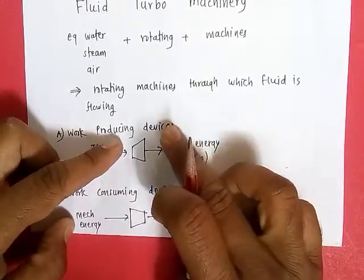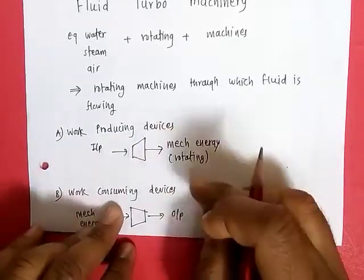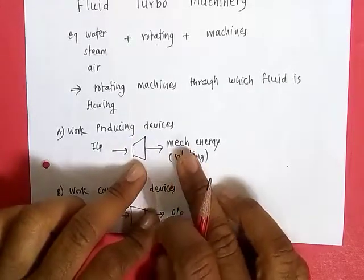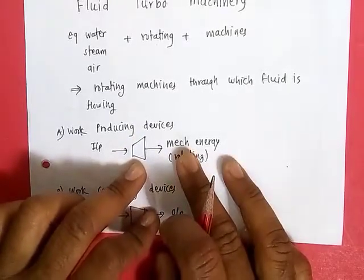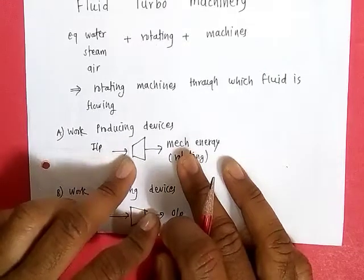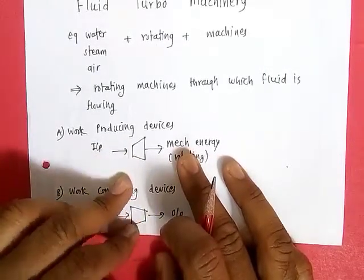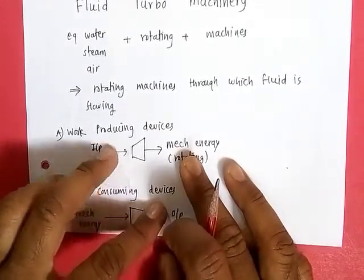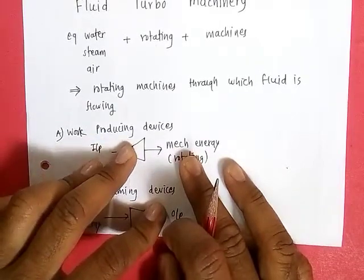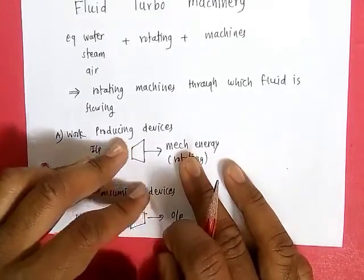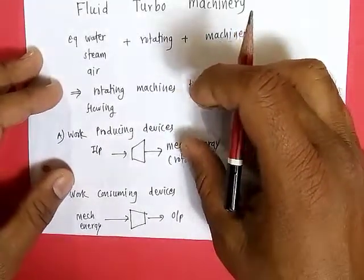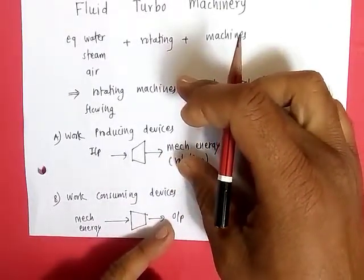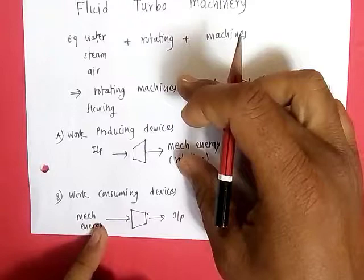Now the major classification of fluid turbo machines is in two ways. First is work producing devices, and second is work consuming devices. Work producing devices means devices which give mechanical energy as output. By taking any kind of input — the energy from water, gas, steam, or any source — the output should be mechanical energy. Then the device is called a work producing device.